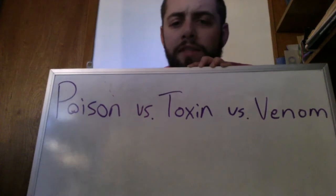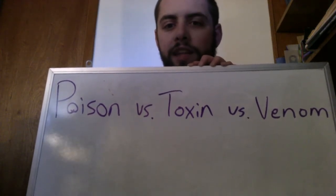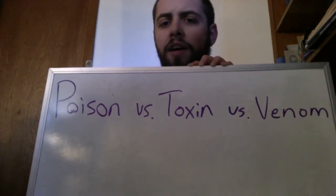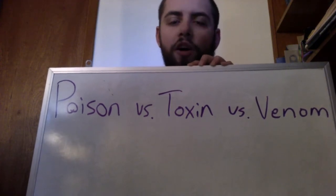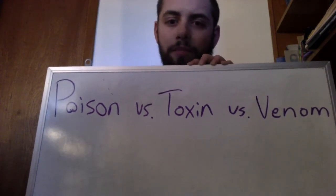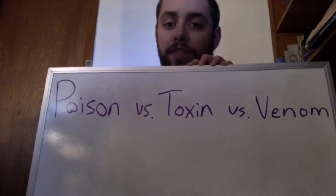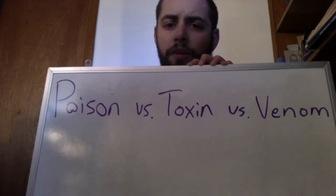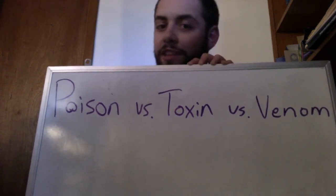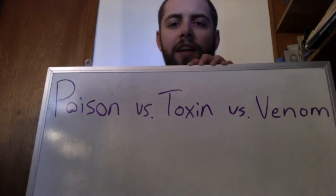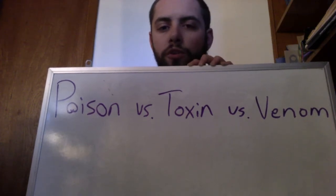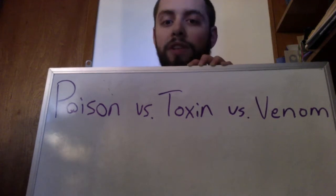And then the last one: venom. Venoms are kind of like toxins — they're substances that organisms produce in their own body — but instead of a defense mechanism, a venom is used as a weapon. Examples of venomous animals: snakes are venomous, a lot of spiders are venomous, if you get a bee sting that's venom, a stingray is venomous, there's possums, platypuses — platypus spurs are actually venomous. Anything that an organism would use as a weapon, we would say that is venomous.